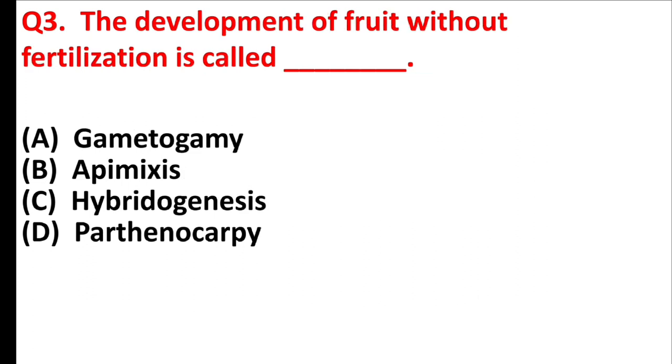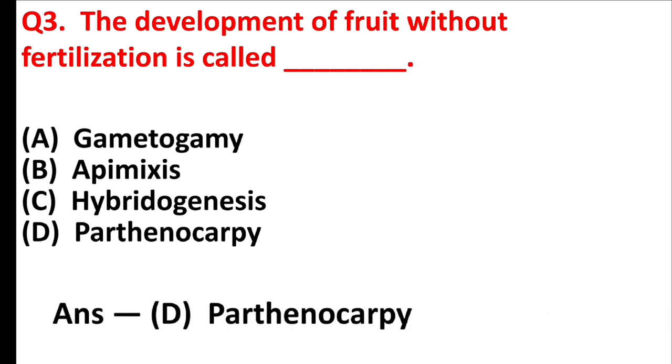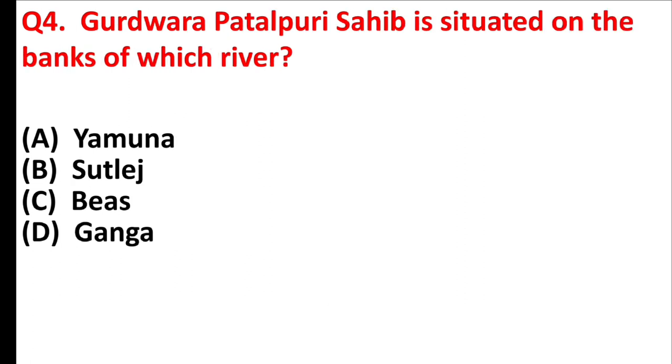The development of fruit without fertilization is called — Option D, Parthenocarpy.